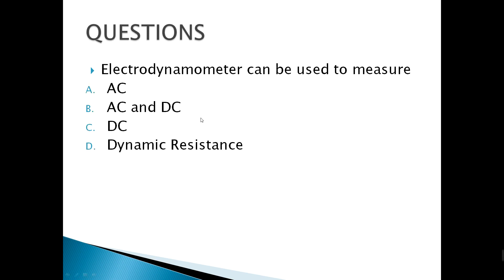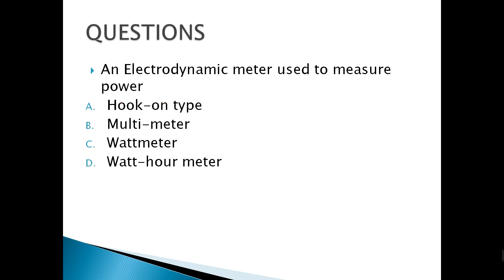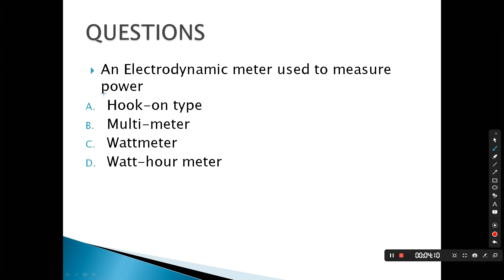Next, the electrodynamometer can be used to measure both AC and DC. An electrodynamic meter used to measure power — with 'power' as the keyword — is what we call the wattmeter.